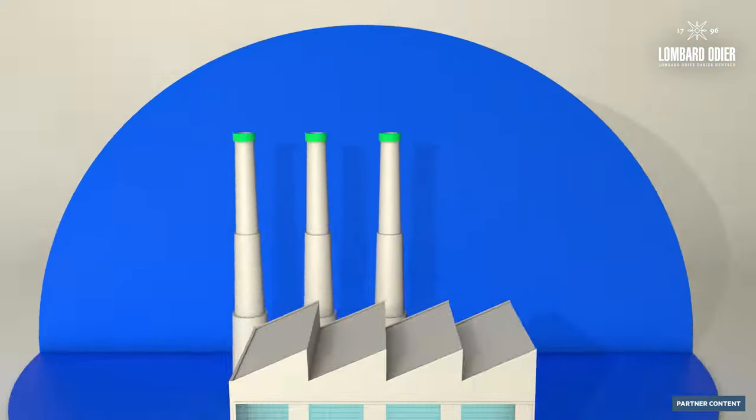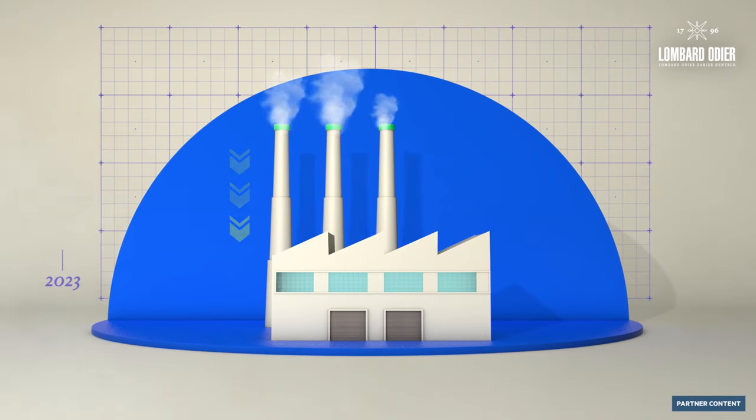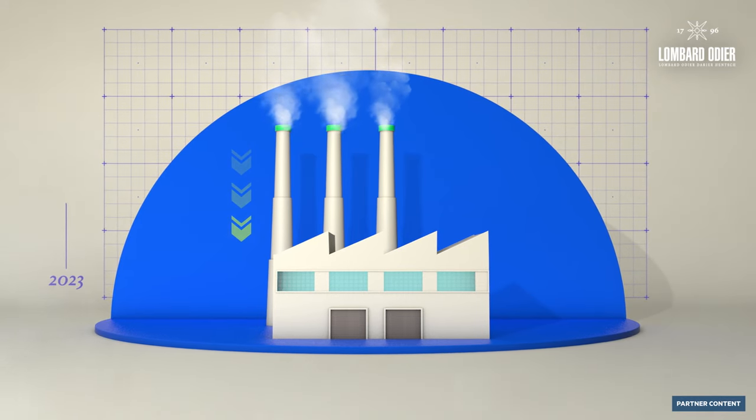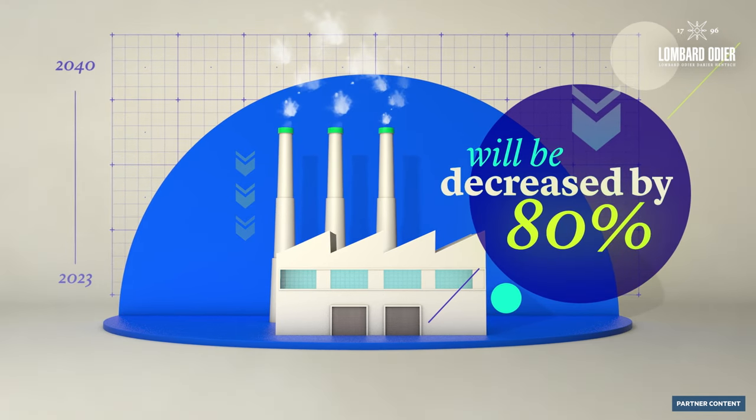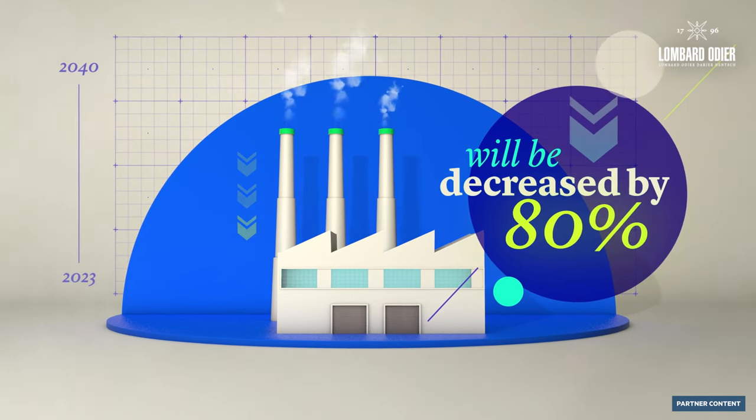A 2023 report from the UN Environment Programme predicts that global plastic pollution could be slashed by 80% by 2040, if stakeholders implement the changes necessary.